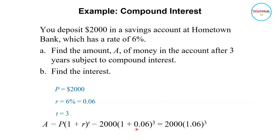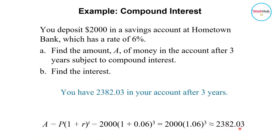Then you compute 1 plus 0.06, that's 1.06 raised to 3. Then multiply it to 2,000, you get 2,382.03. So this amount here is the amount of money in the account after 3 years subject to